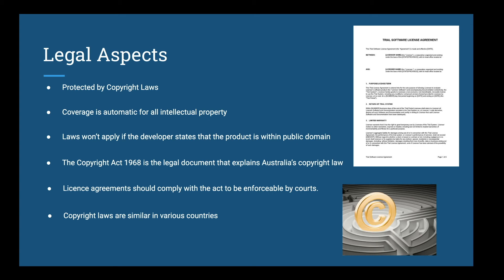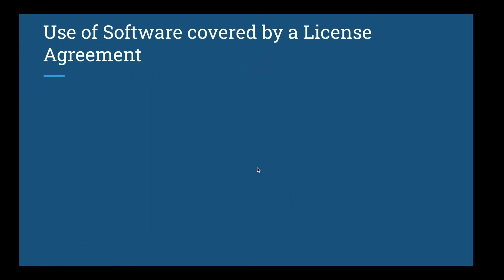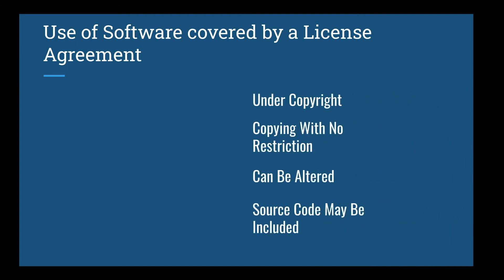The Australian copyright laws are thoroughly explained in the Copyright Act of 1968. To be enforced by courts, all software license agreements should comply with this act. Some countries uphold the copyright laws of other nations. There are many variations of software licenses as a result of differing products. These types include commercial licenses, which are covered under copyright and only one copy can be made for archiving purposes. The product must not be altered, distributed or reverse engineered, and the source code is not included.